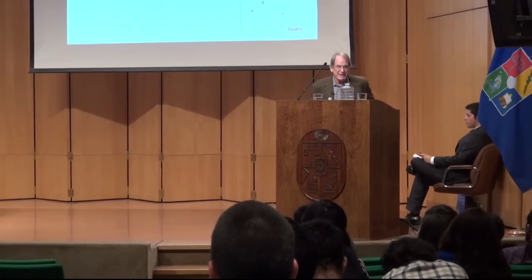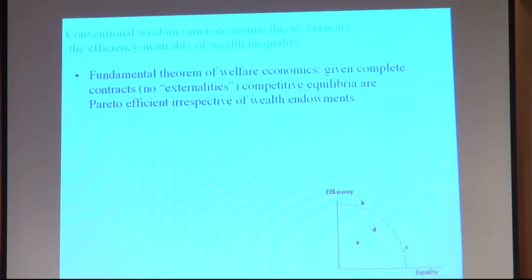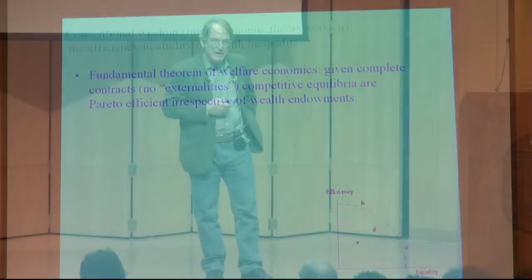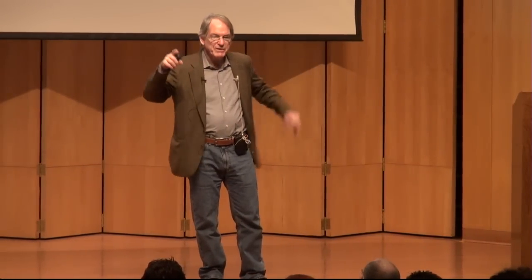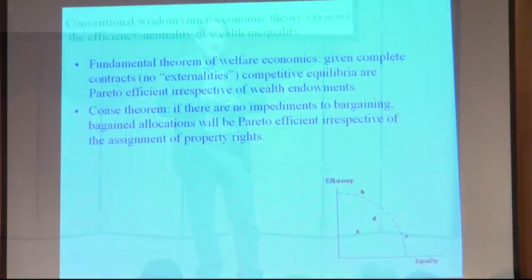The fundamental theorem of welfare economics states that competitive interaction between buyers and sellers supports a Pareto-efficient outcome irrespective of the initial distribution of wealth. And the Coase theorem says more or less the same thing: with efficient bargaining, irrespective of the distribution of property, you'll have an efficient outcome — meaning no one can be made better off without someone being made worse off.